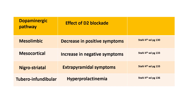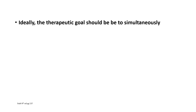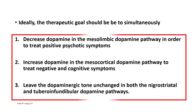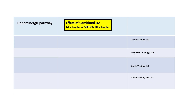Ideally, we should have drugs that block dopamine receptors in the mesolimbic pathway but increase dopamine levels in the mesocortical, nigrostriatal, and tuberoinfundibular pathways. This goal is partially achieved by combined blockade of both D2 receptors and 5HT2A receptors — the 5HT2A receptors being serotonin receptors.